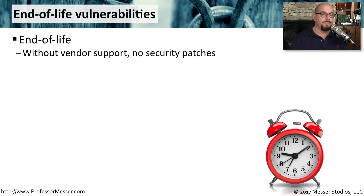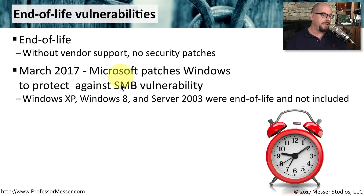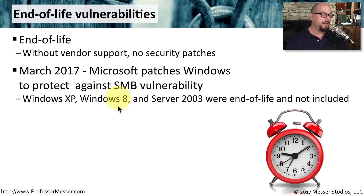A vulnerability that might sneak up on you is an end-of-life vulnerability. This is when a device, component, or piece of software is no longer under support from the vendor, and the vendor stops providing any type of security patches. We saw this in March of 2017, where Microsoft patched Windows to protect against an SMB vulnerability. Except when they did that, Windows XP, Windows 8, and Windows Server 2003 were end-of-life and were not included with any of those security patches.